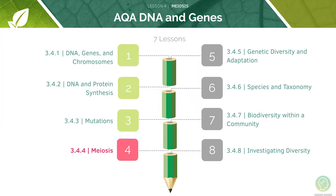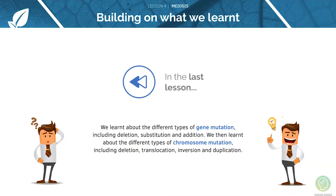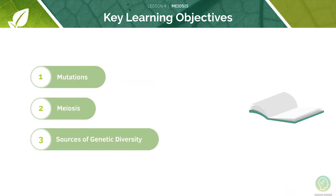This is the fourth video in our series of 8 lessons on the topic of DNA and genes. In the last lesson, we looked at gene and chromosome mutations. Here are the key learning objectives for today's lesson. We will be looking at mutations, meiosis, and finally some sources of genetic diversity.